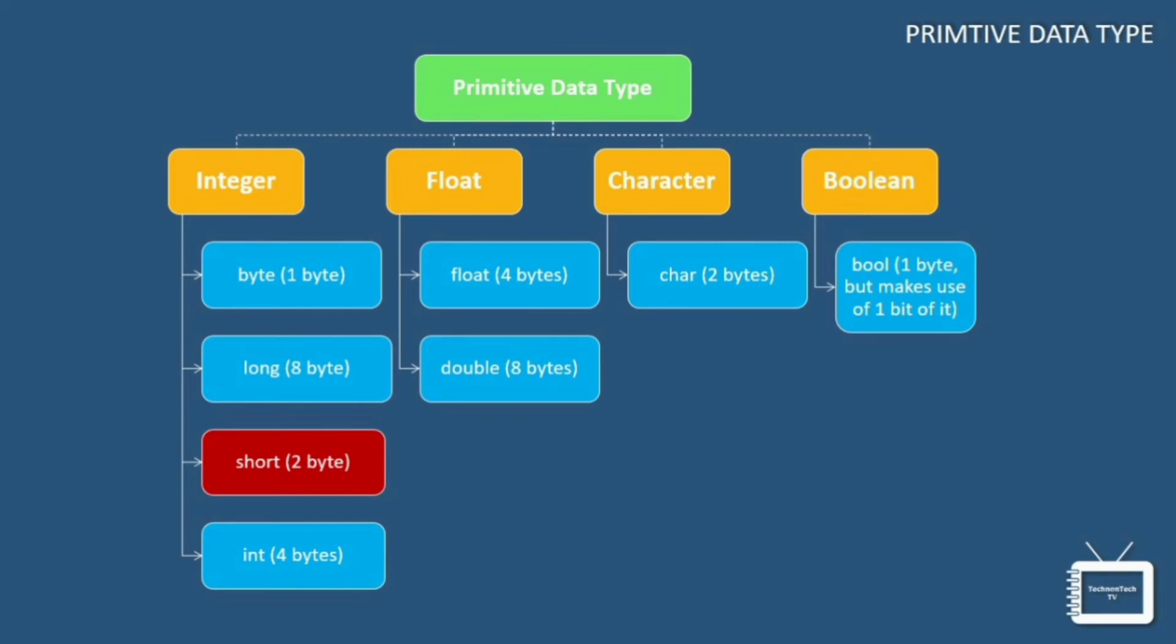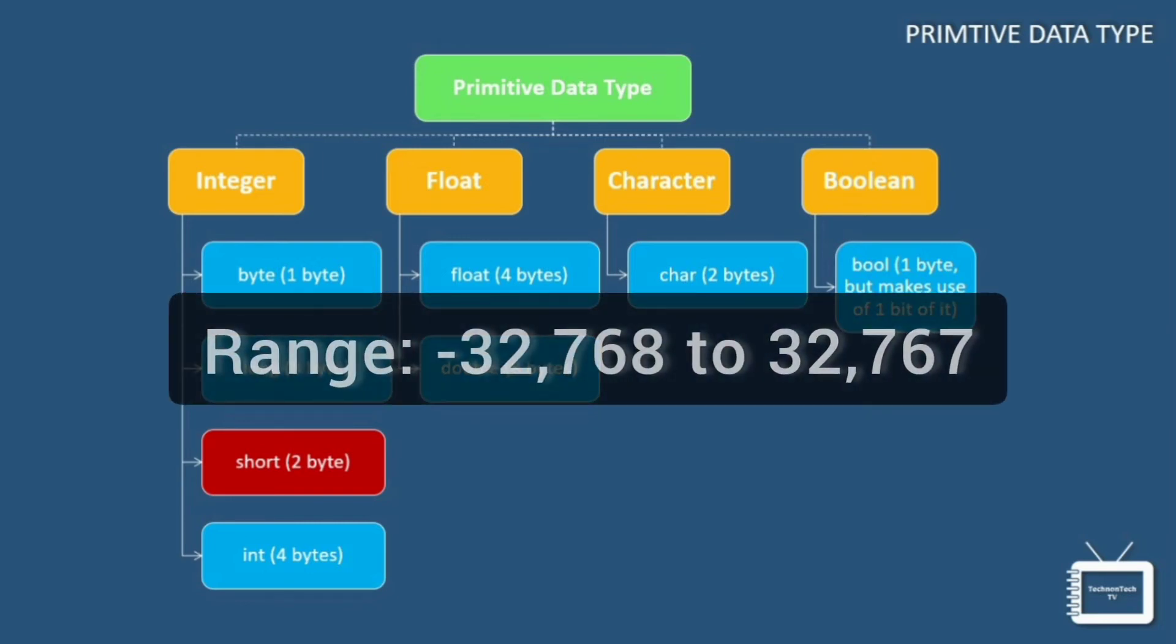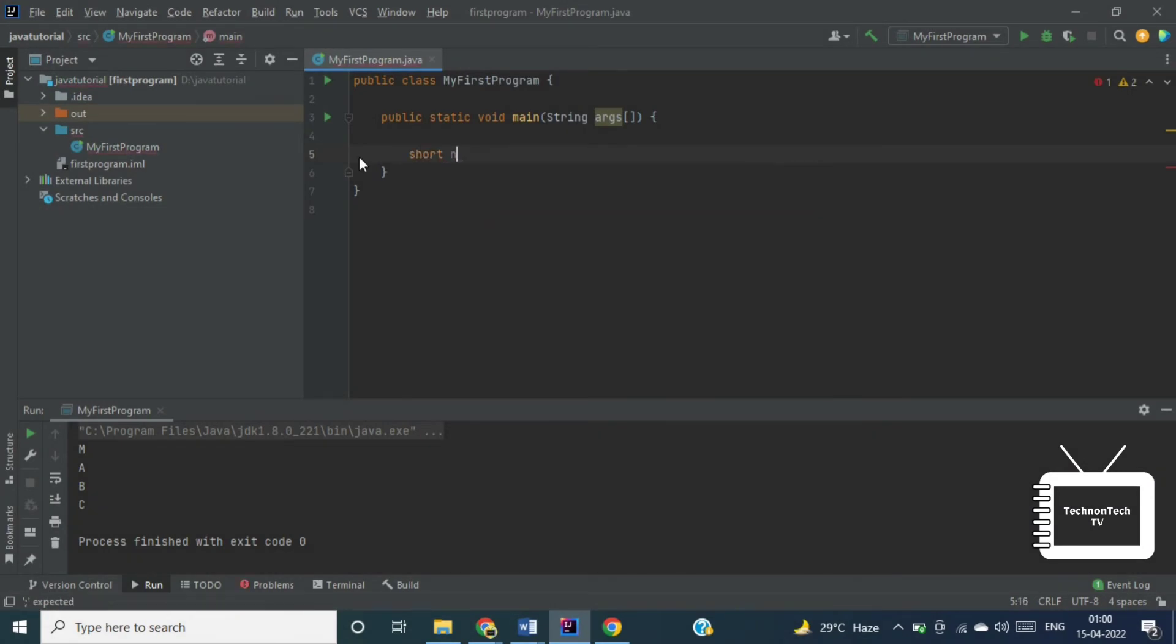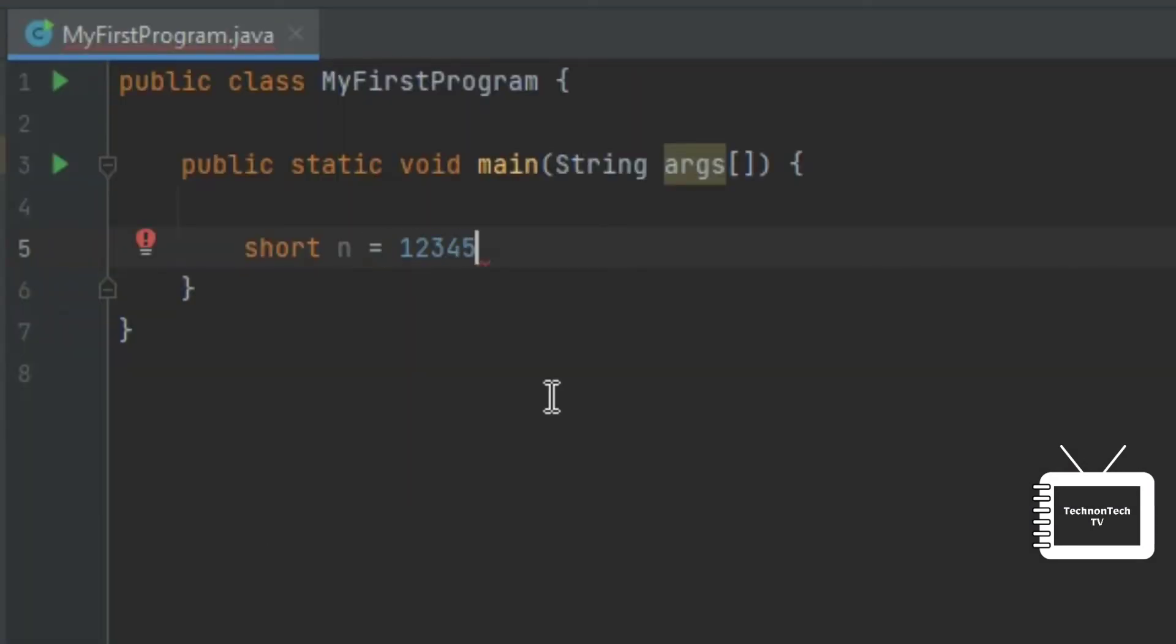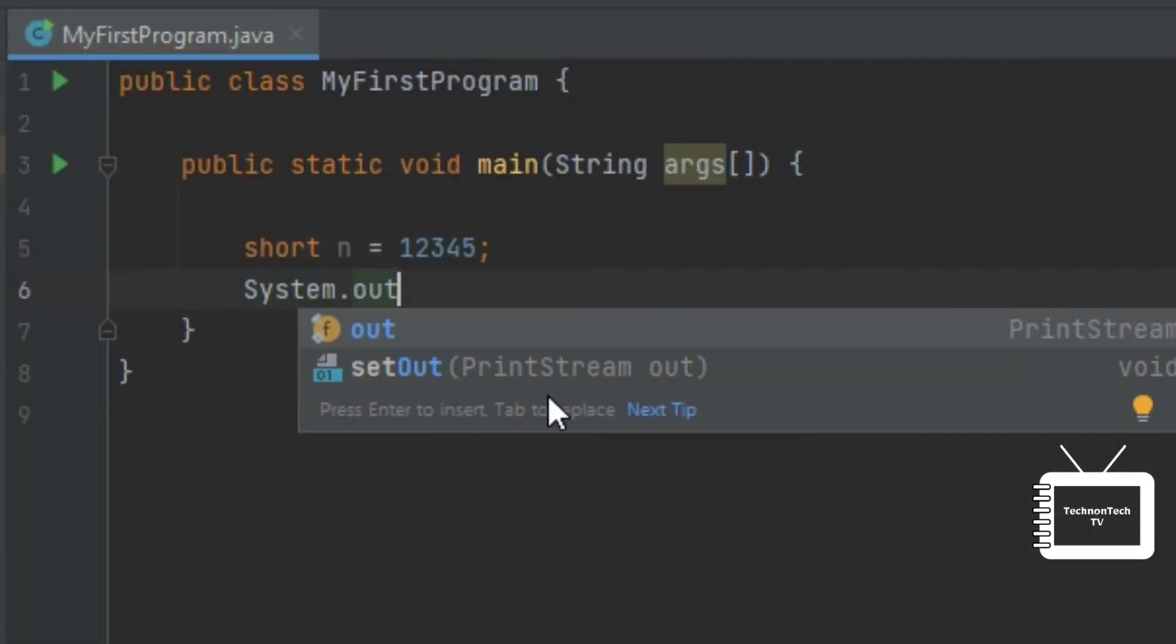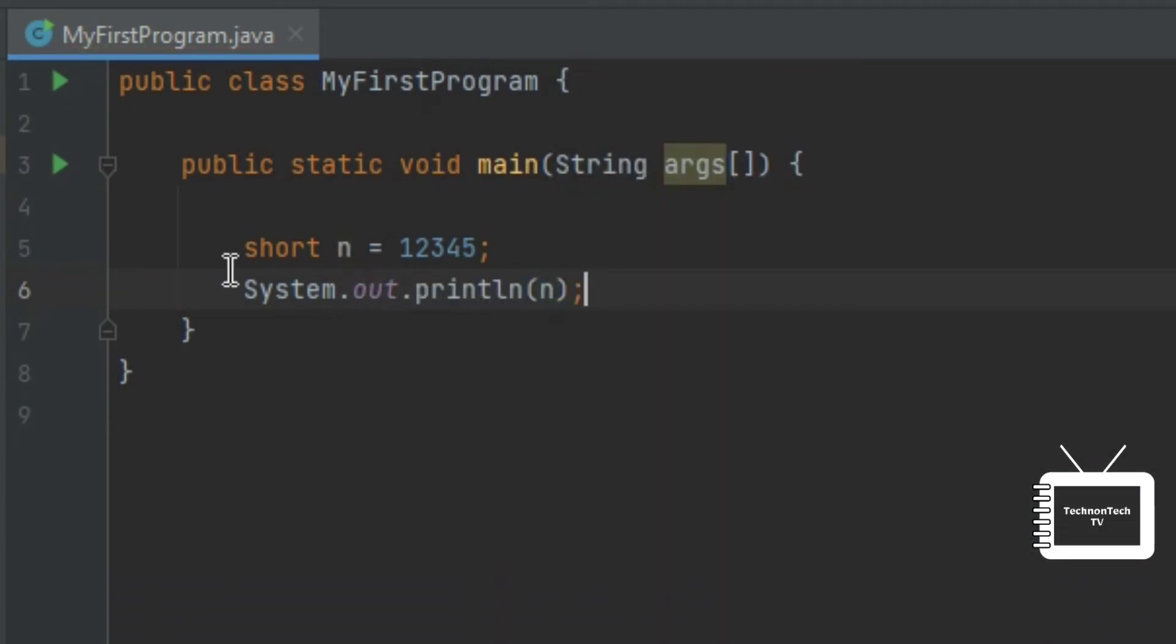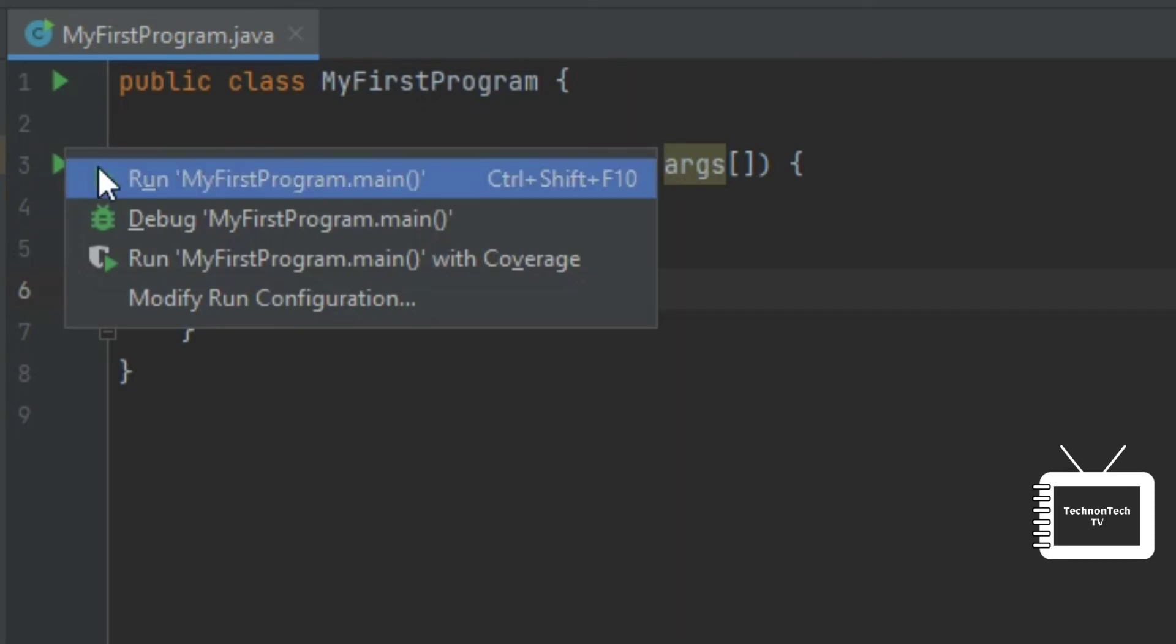It stores values that range from minus 32,768 to 32,767. The default size of this data type is 2 bytes. So let's take an example. So here it will print the value present in n variable that is 12345. Now let's run the program.